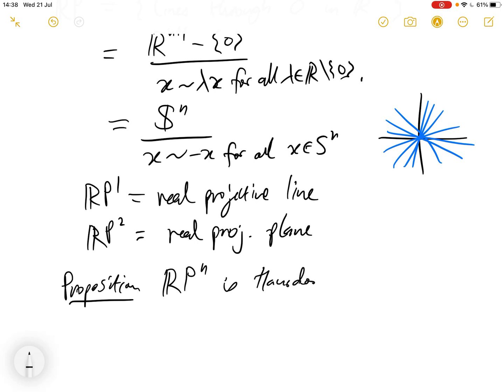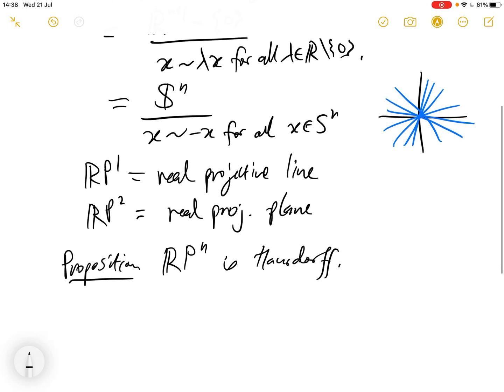So if we want to prove that RPn is a Hausdorff space, we need to show that for any two distinct elements in RPn, there are disjoint open sets containing those two points. So let's take two elements, x and y in RPn.